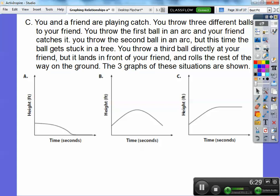Here's some more graphs. You and a friend are playing catch. You throw three different balls to your friend. You throw the first ball at an arc and your friend catches it. You throw the second ball at an arc but this time the ball gets stuck in a tree. And so which one do you think is getting stuck in a tree? I'm guessing this one right here. You throw a third ball directly at your friend but it lands in front of your friend and then rolls the rest of the way on the ground. So it looks like this one. This is the one that he throws and his friend is over here and you can see it's kind of rolling, rolling, rolling. This one right here is probably that first one. You throw it and then your friend catches it right here because this is the height of the ball. So if the kid is five feet tall then it catches it right there at five feet right there.